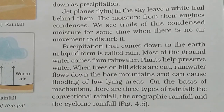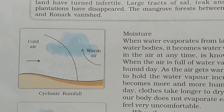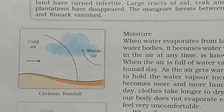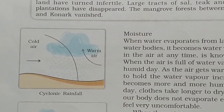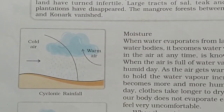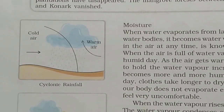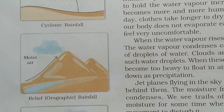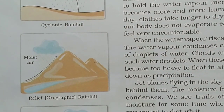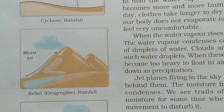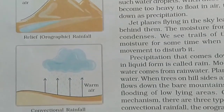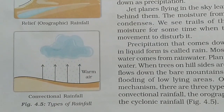On the basis of mechanism there are three types of rainfall: conventional rainfall, orographic rainfall, and cyclonic rainfall. Pictures are shown here to describe each type — the first picture shows cyclonic rainfall, the next shows moist air giving orographic rainfall, and the third shows conventional rainfall.